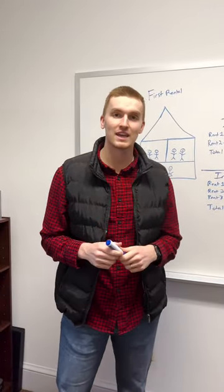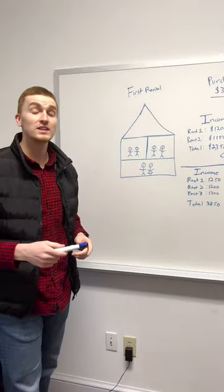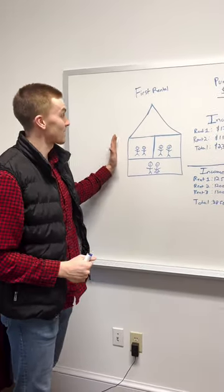In this video, I want to go over how I was able to cash flow $2,070 a month on my first rental property. What we did on our first property is we house hacked and bought a triplex.